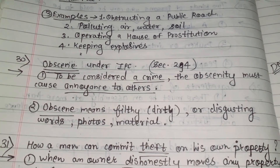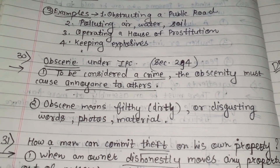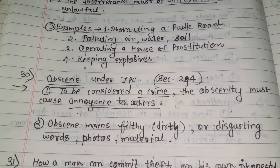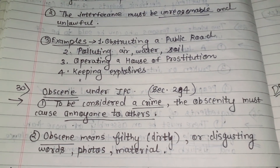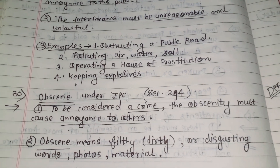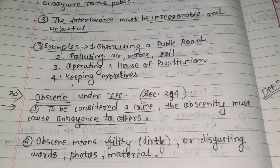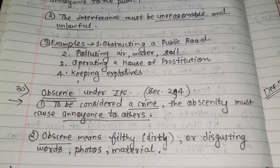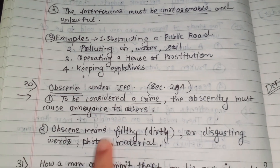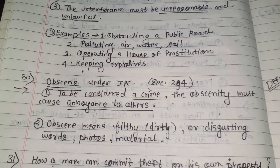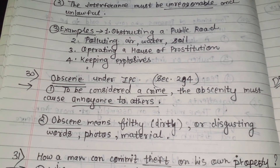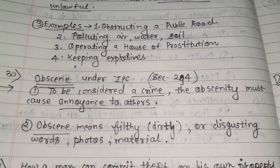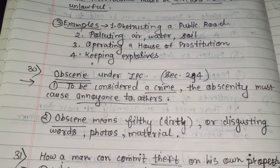Regarding the term 'obscene' under IPC Section 294: to be considered a crime, the obscene act must cause annoyance to others. Obscene means filthy, dirty, or disgusting words, photos, or material. This is defined under Section 294 of IPC.